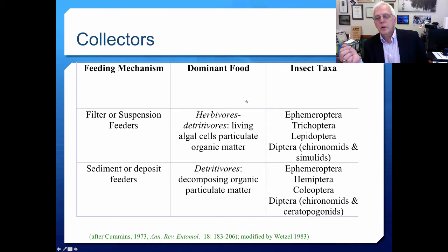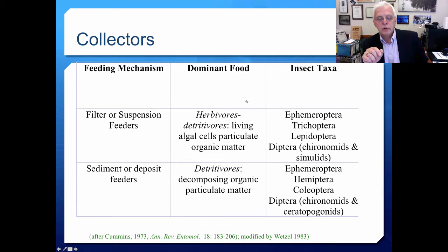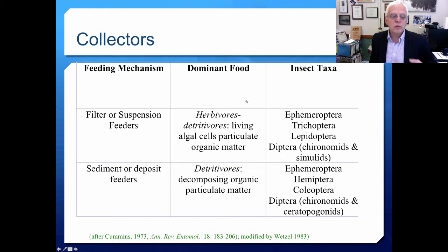Collectors include the Ephemeroptera (mayflies), Trichoptera, Lepidoptera, many kinds of Diptera such as black flies and midges, some Hemiptera, and Coleoptera. There are filter or suspension feeders, who pick up living algal cells and particulate organic matter that's free-flowing, and sediment or deposit feeders, who eat decomposing organic particulate matter — much like the endobenthic organisms of lentic systems.